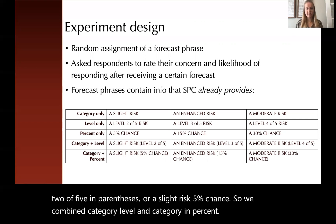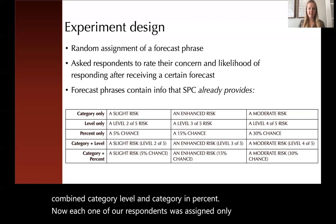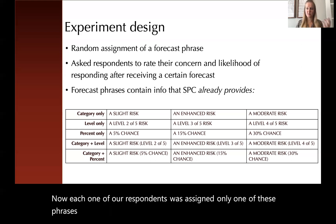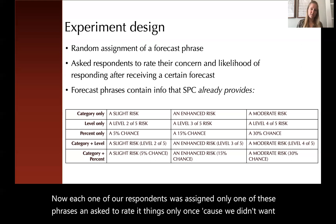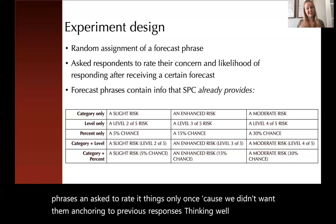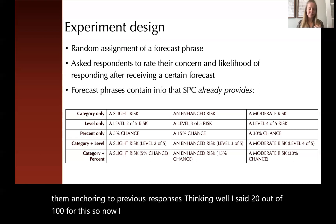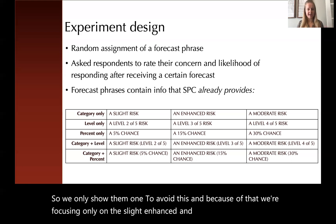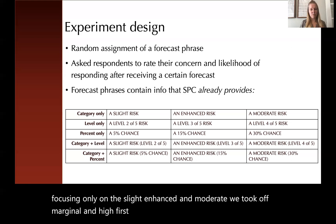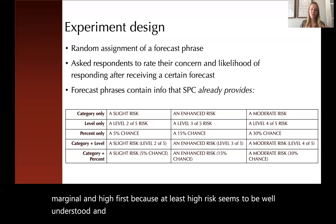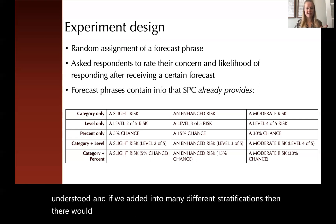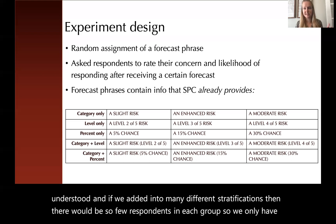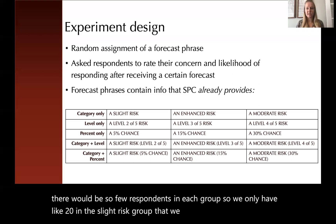Each respondent was assigned only one of these phrases and asked to rate it once, because we didn't want them anchoring to previous responses. We are focusing only on slight, enhanced, and moderate. We took off marginal and high — at least high risk seems to be well understood, and if we added in too many different stratifications, there would be so few respondents in each group that we couldn't really draw relevant conclusions.